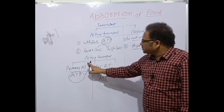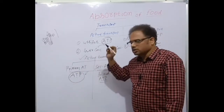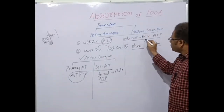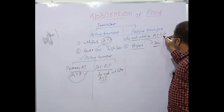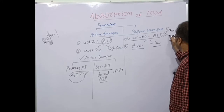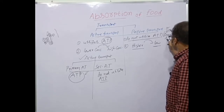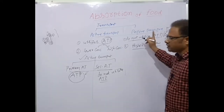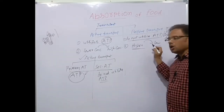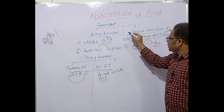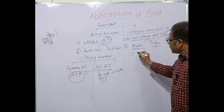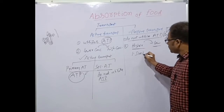Passive transport does not utilize ATP or any other energy source. There is movement of particles from the region of higher to lower concentration. Passive transport is of different types: simple diffusion, facilitated diffusion, and osmosis.